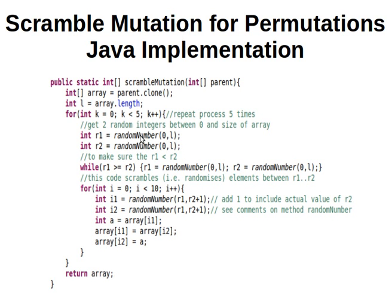We choose two random numbers r1 and r2 between zero and the size of the array. The method called randomNumber generates a random integer between zero and l minus one, so l is exclusive. The while loop ensures that r1 is less than r2 — if r1 is greater than or equal to r2, we keep looping and picking new random numbers.